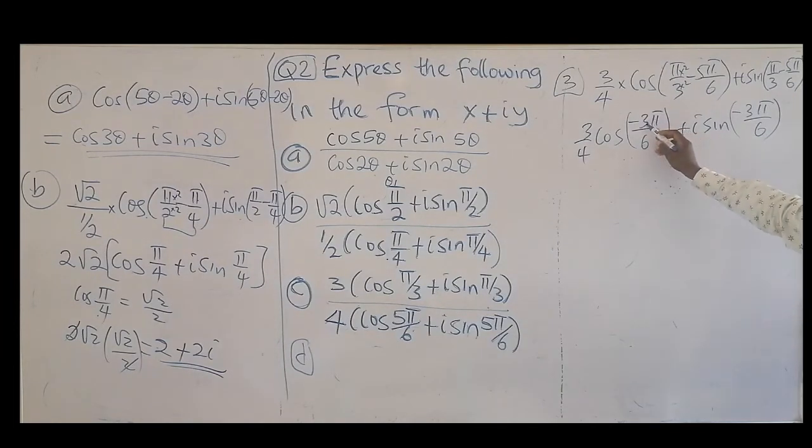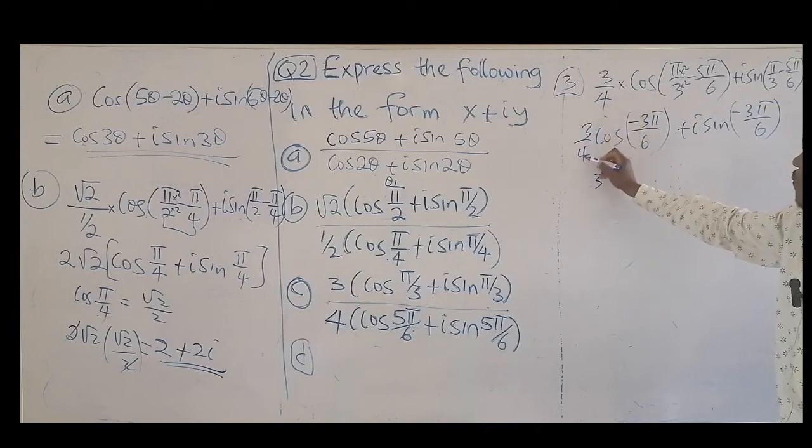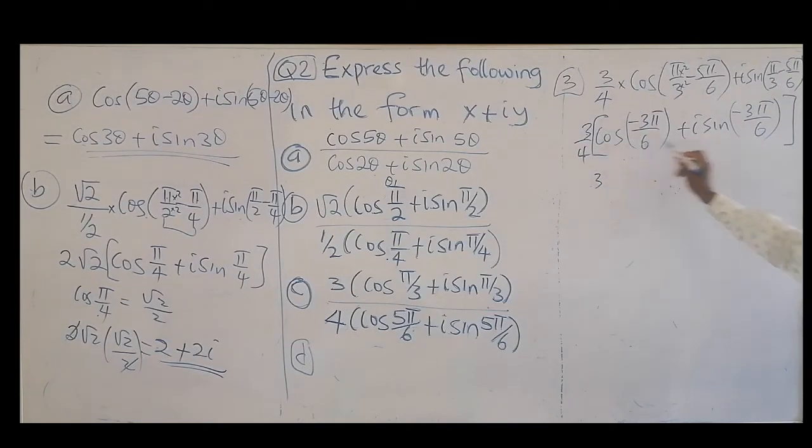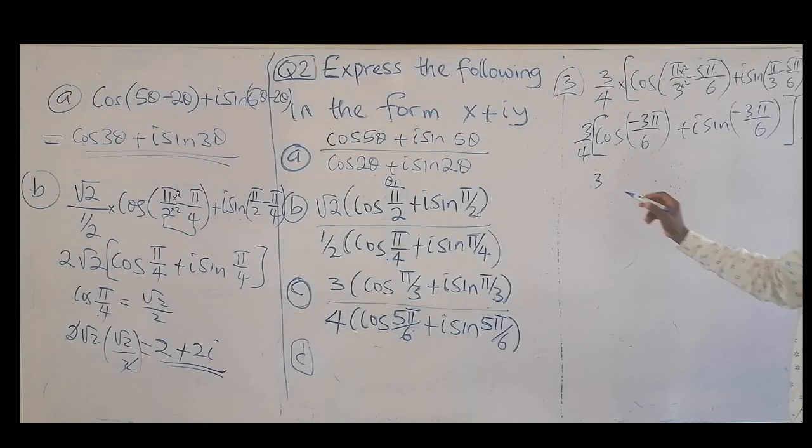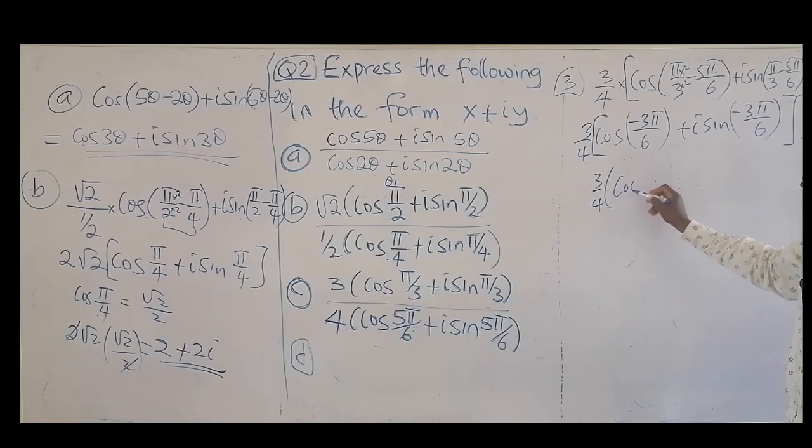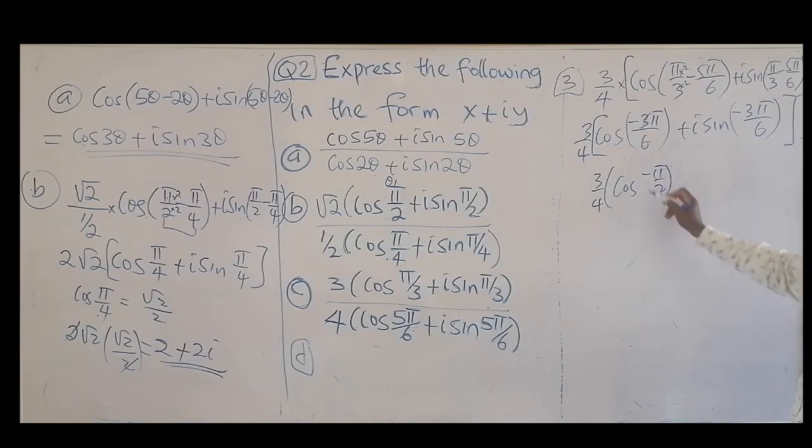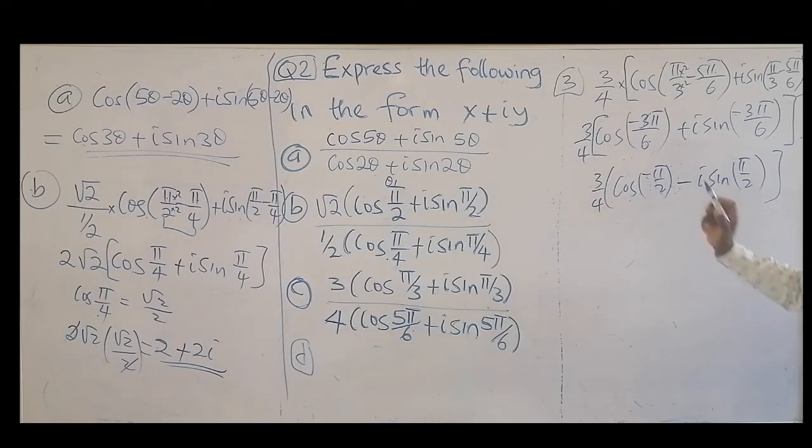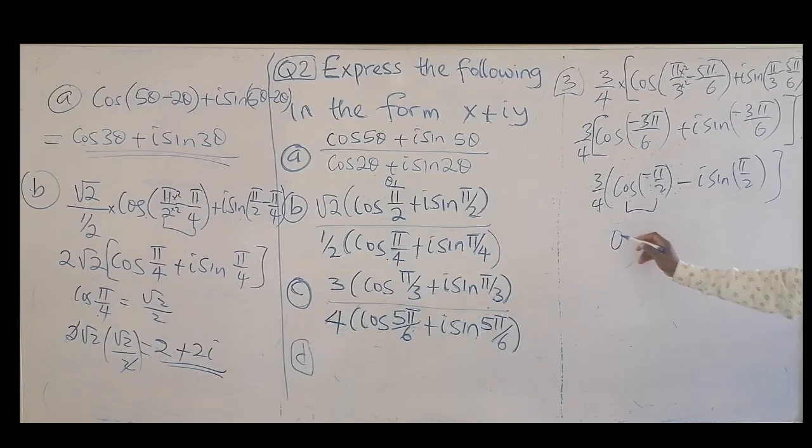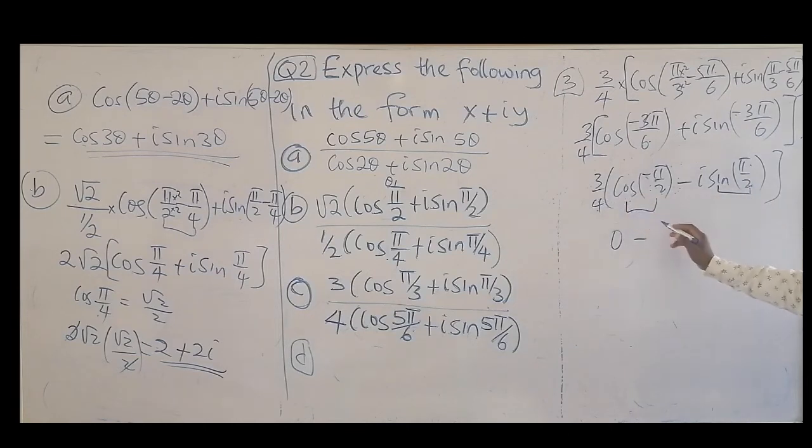So this one can be expressed as what. Don't forget this 3 over 4 is the modulus. You open the bracket and you close it. So that would be 3 over 4 cos 3 over 2, that's minus pi over 2. And then because of the minus here, this can change with minus i sine pi over 2. Cosine of negative is positive. So this would be 0. And this one is 0 minus this one. This one is sine of 90. Pi over 2 is 90. So this is 1. And this one is 3 over 4.